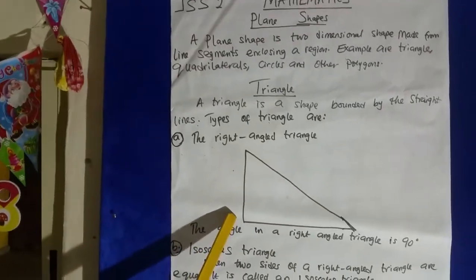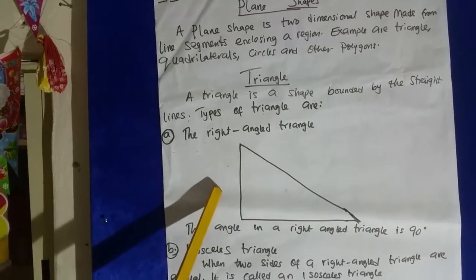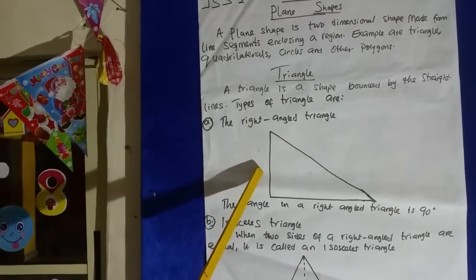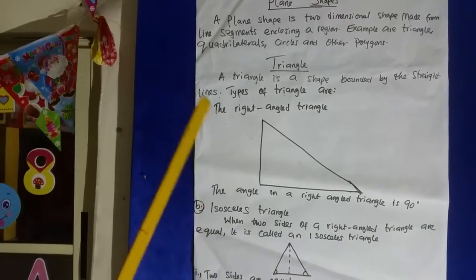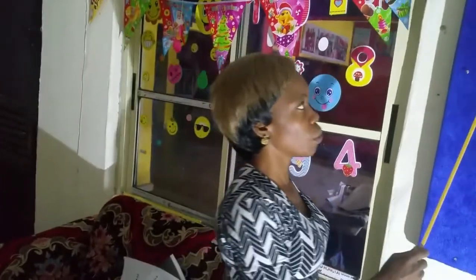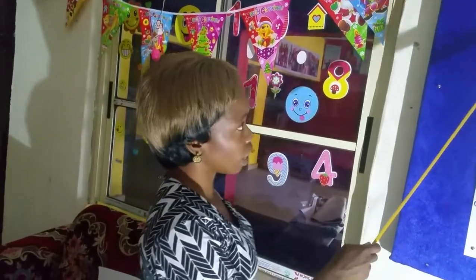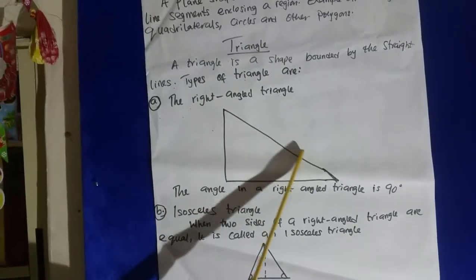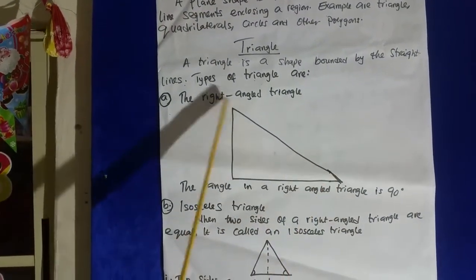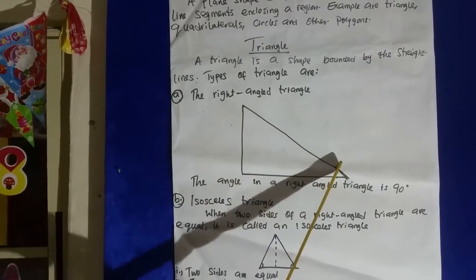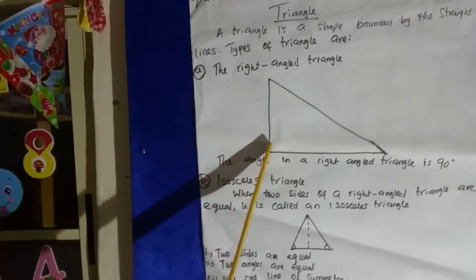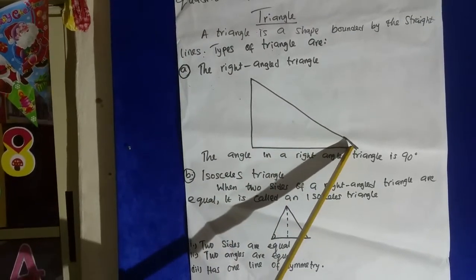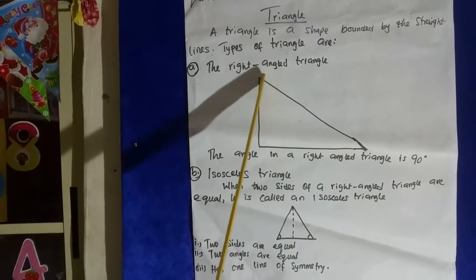This is the shape of a right angle triangle. We have different types of triangles, but the one I'll be taking now is the right angle triangle. This part is called the hypotenuse. This part is called the opposite. And this part is called the adjacent.